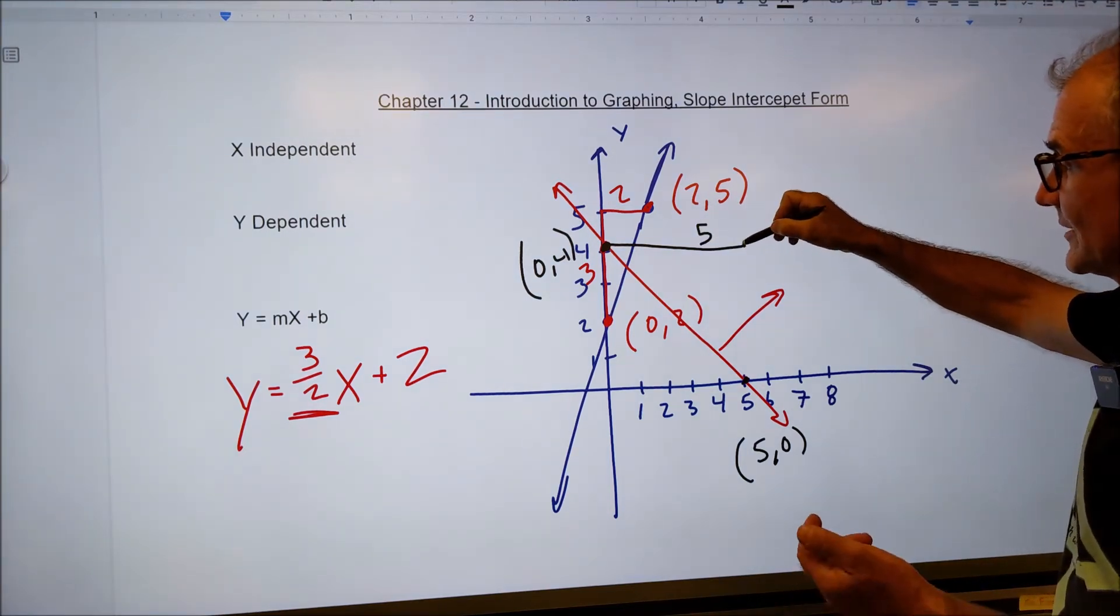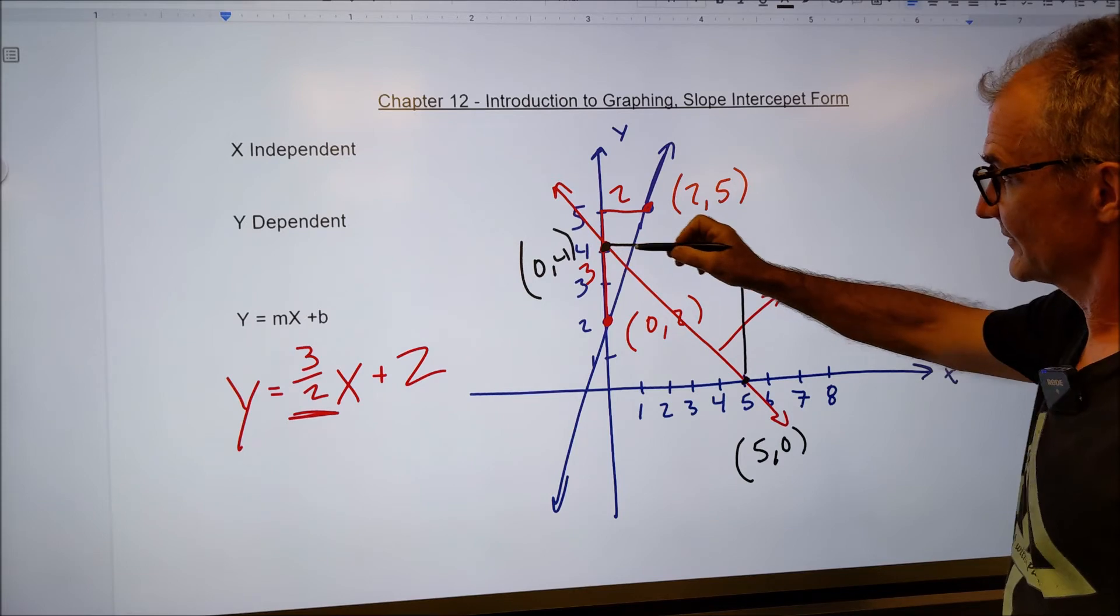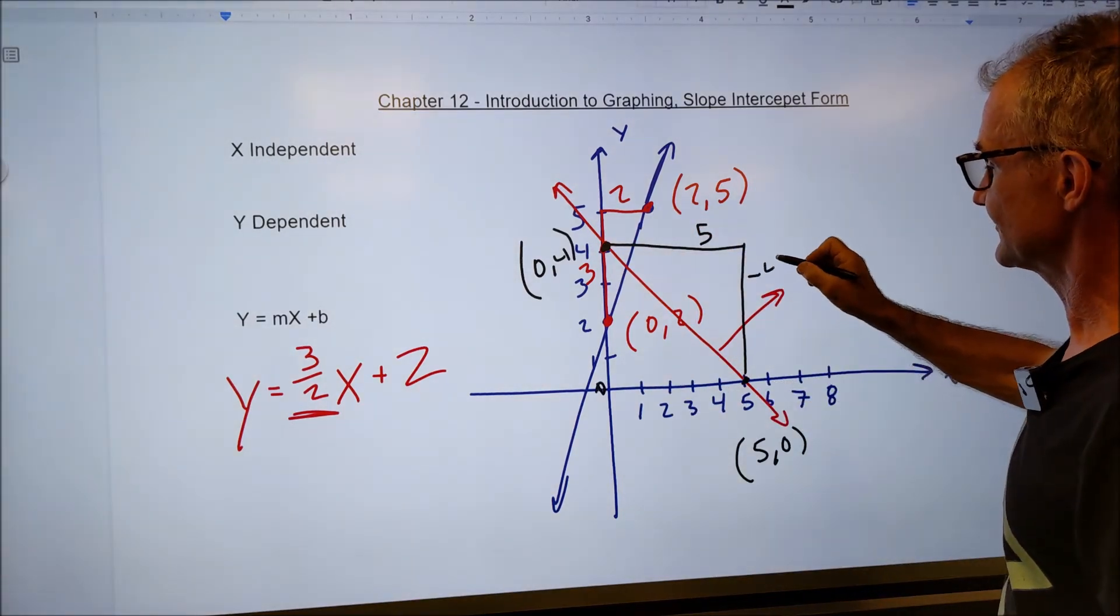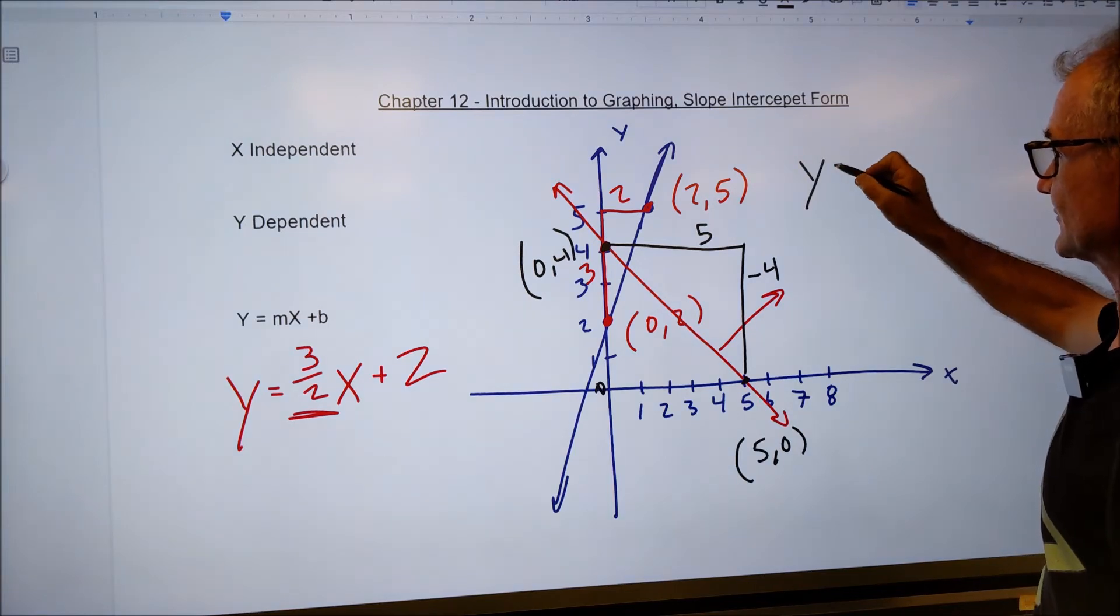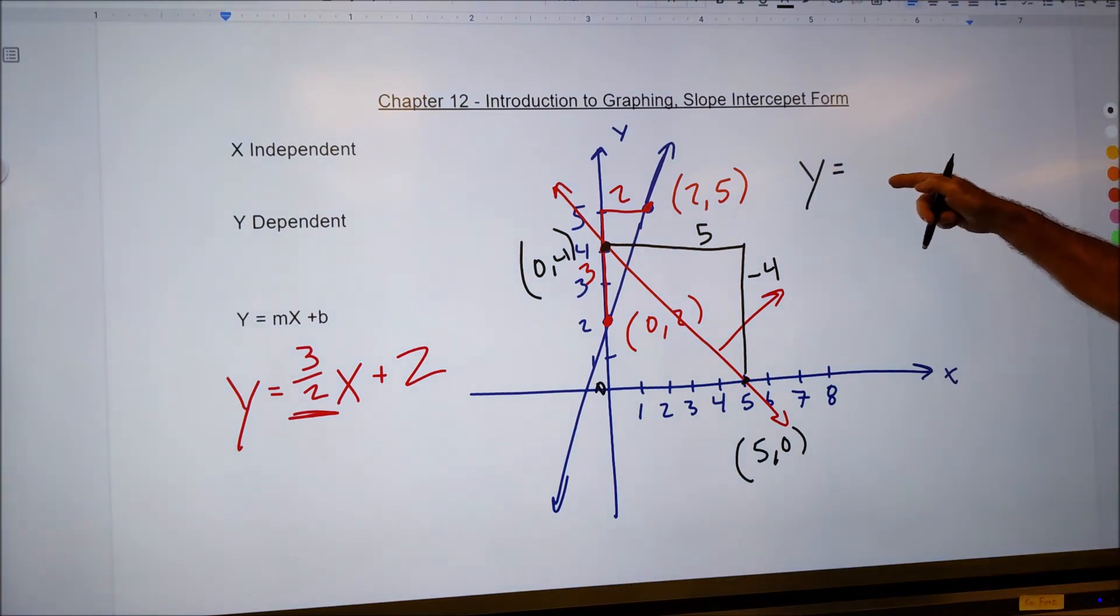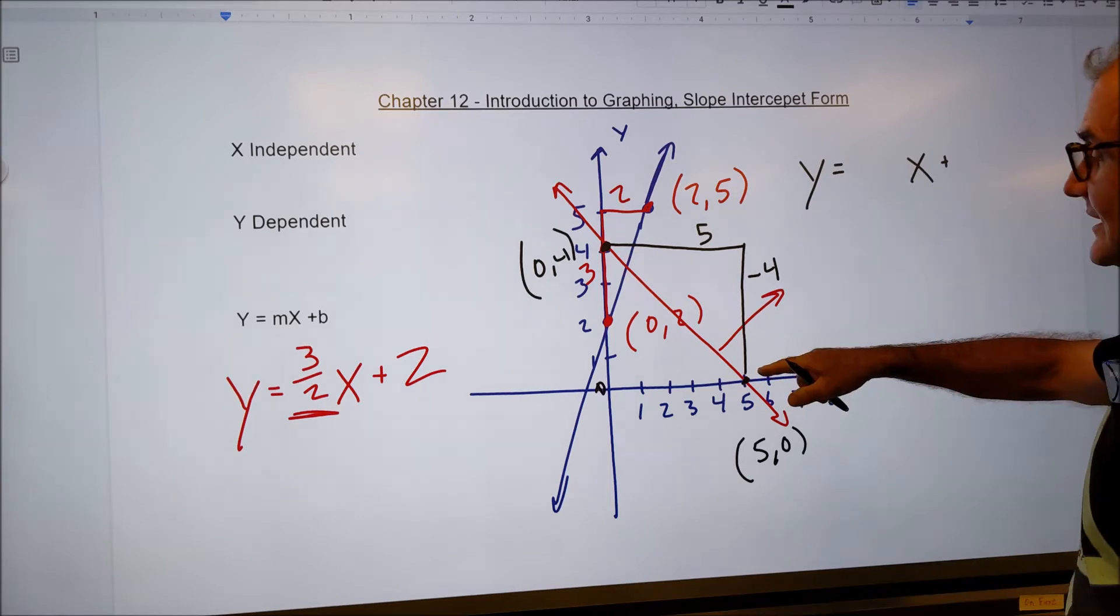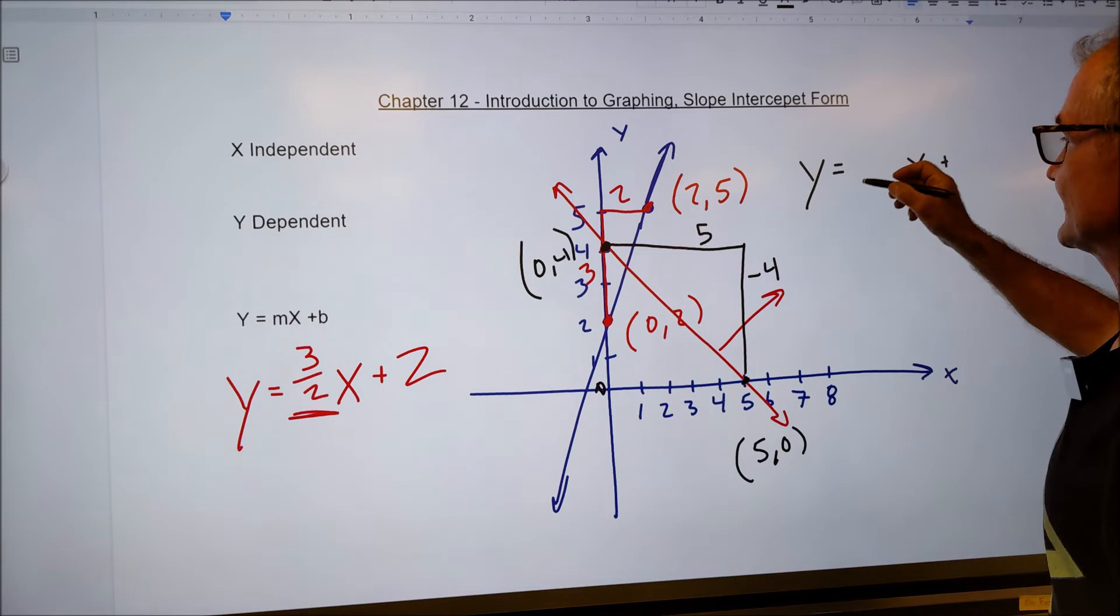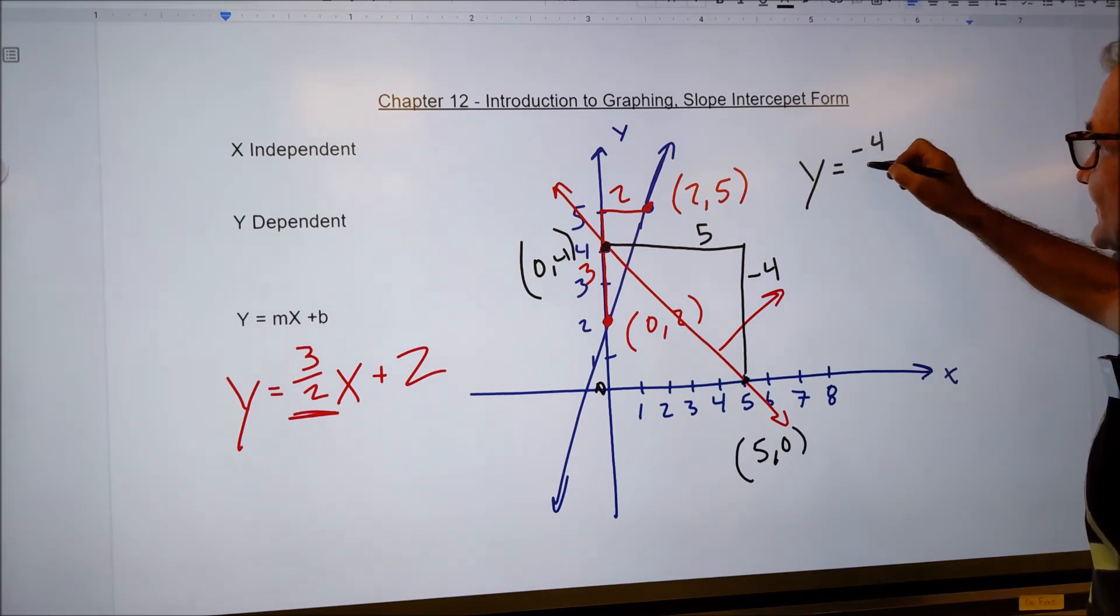Rather than go up, I'm going down. So I go from a height of four to a height of zero. So I go down negative four. My general equation is y equals m slope x plus b y-intercept, rise over run. So I rise negative four. I run five. So it's negative four fifths.